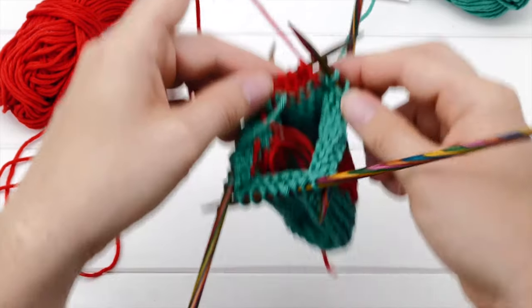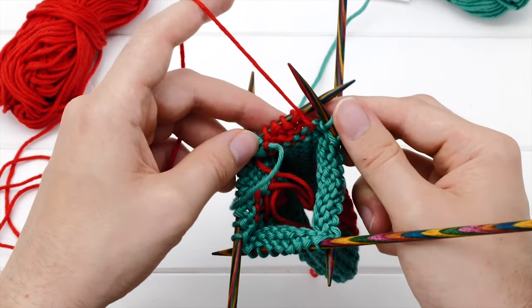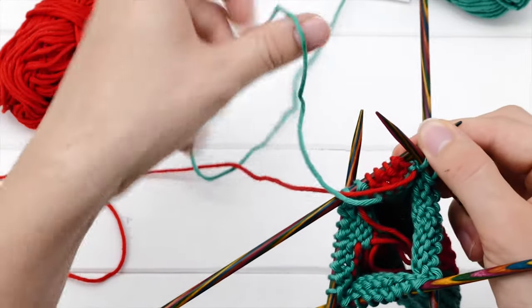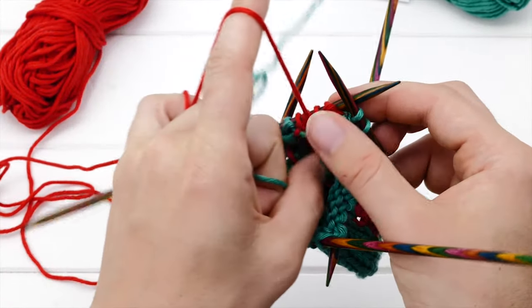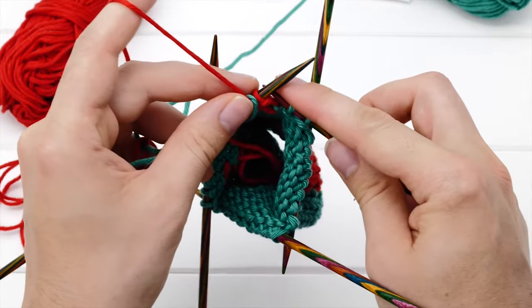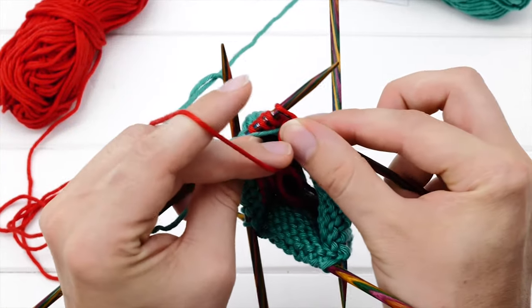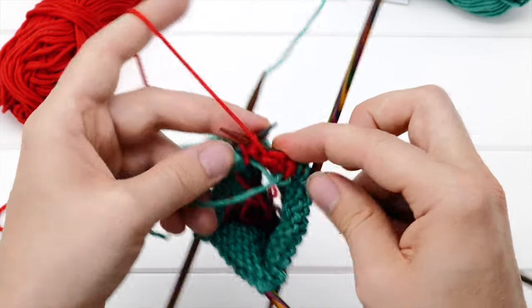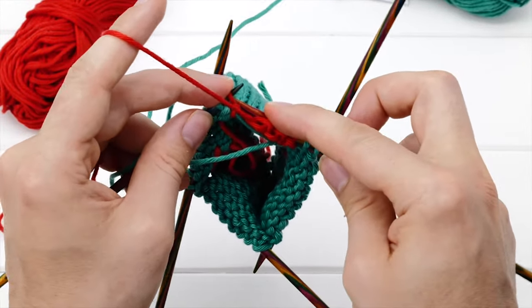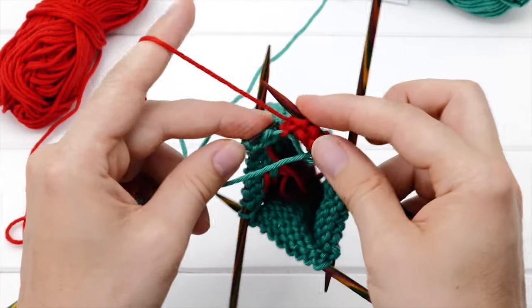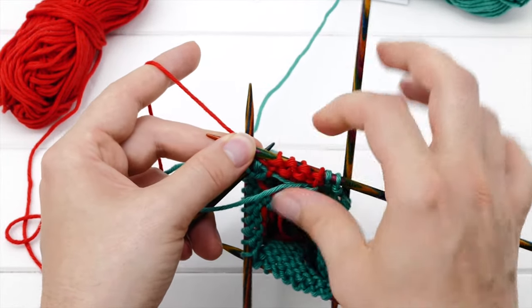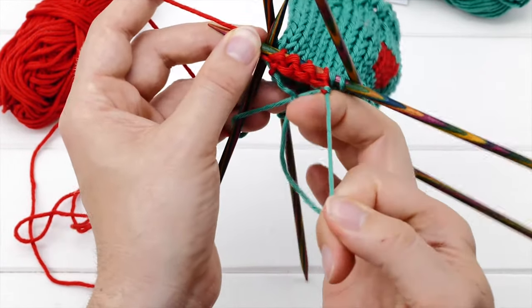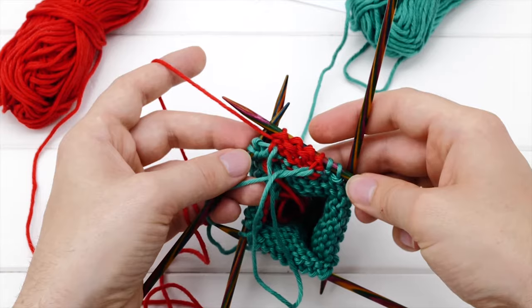Again, we have to create another provisional joint. So, cross the teal across the red. Like so. And then purl all the way back. And that's how you knit intarsia in the round. So, you're always knitting back and forth and creating provisional joints. And then you're knitting from the loops you created in that manner.